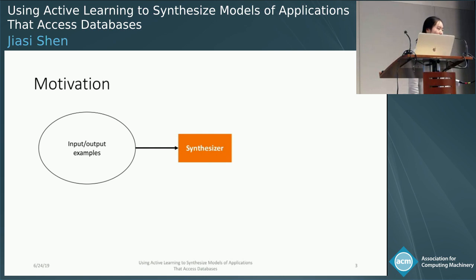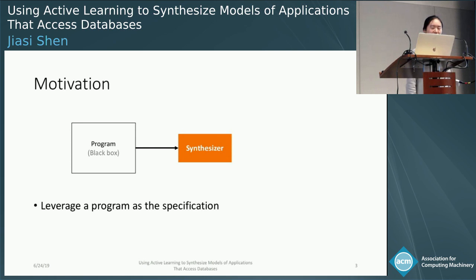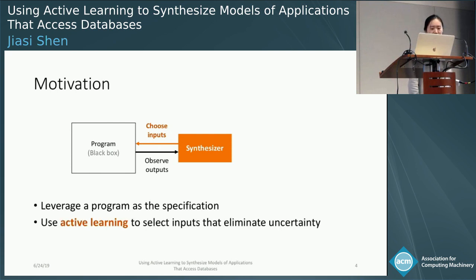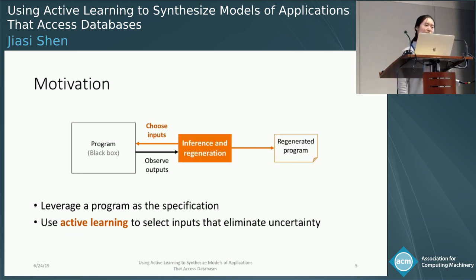So instead of using input examples, we now use a program as the specification. Now we are no longer restricted by the examples that the user manually writes. Instead, we can generate whatever inputs we need. We can use active learning to eliminate uncertainty. In this research, we produce a unique equivalent class of programs that satisfy the chosen input-output behavior. Now this problem is no longer program synthesis, but more about inference and regeneration.